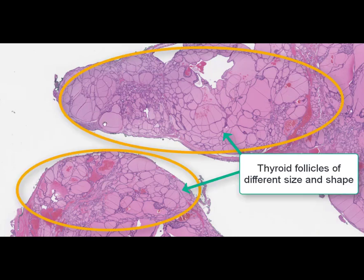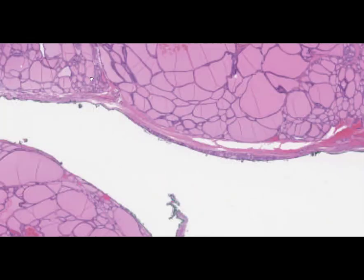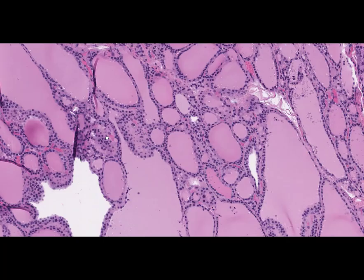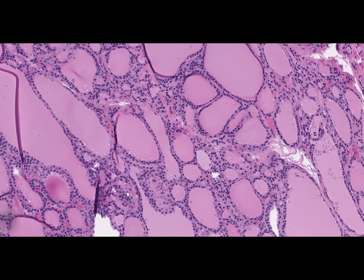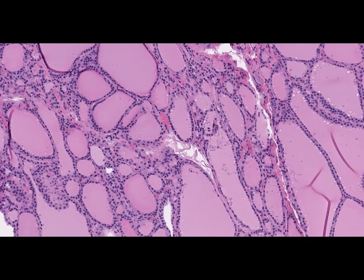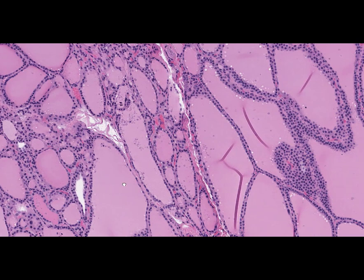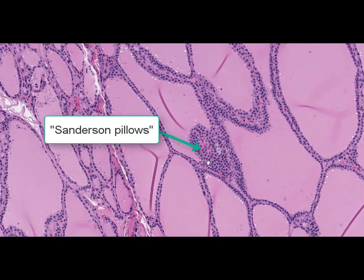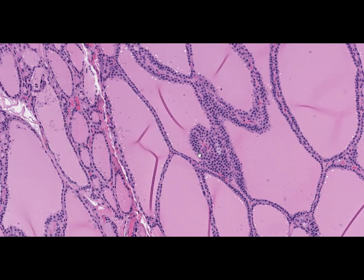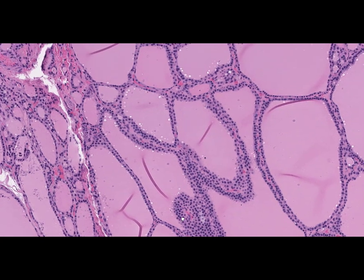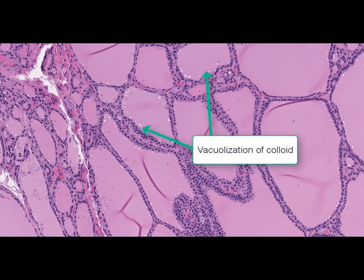At high magnification, we can see that the follicular epithelium becomes taller or cylindrical. The follicular epithelium forms outgrowths protruding inside follicles, which is typical for Graves' disease — such formations are commonly known as Sanderson's pillows. Sometimes the colloid substance undergoes dilution, seen in the form of colloid vacuolization within the thyroid follicles. Diffuse lymphohistiocytic infiltration can also be seen in the stroma of the thyroid gland.